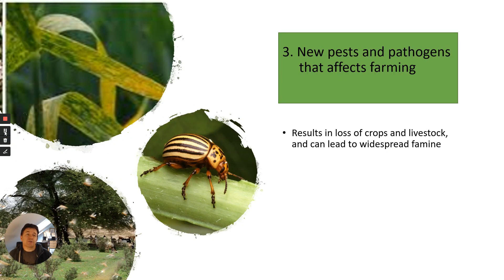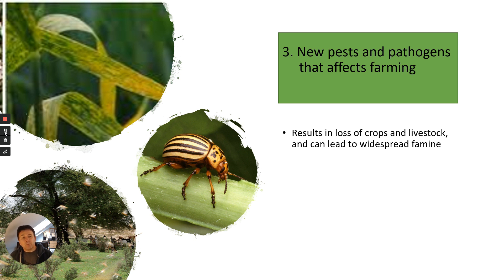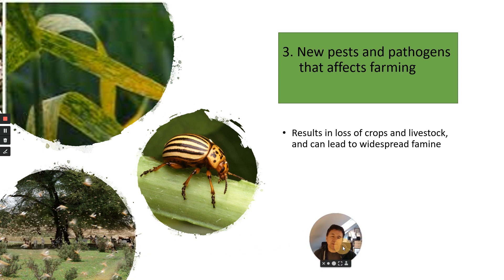Another issue with food security is that there may be new pests and pathogens that affect farming. A pest might be introduced into a new country and take over, basically reducing the amounts of crops that can be grown. You could also have widespread famine due to episodes such as locust swarms, and insect outbreaks can occur due to certain climatic changes.